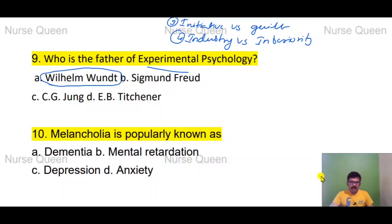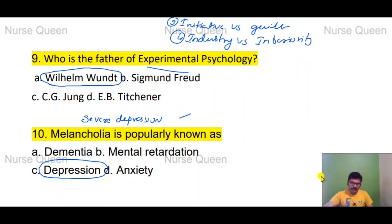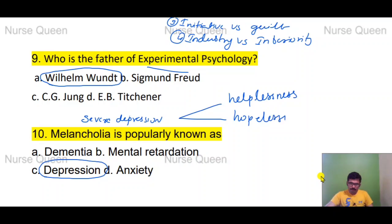Melancholia is popularly known as — options: dementia, mental retardation, depression, or anxiety. Melancholia is severe depression. Depression is characterized by the 3H: helplessness, hopelessness, and worthlessness.